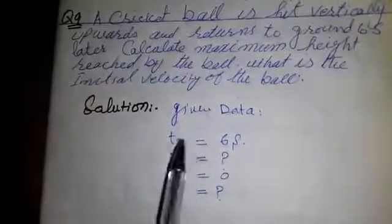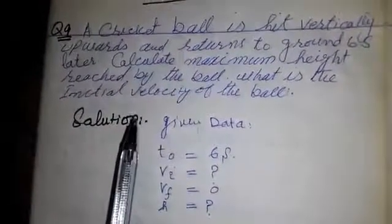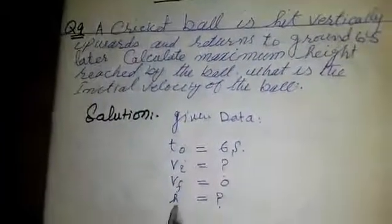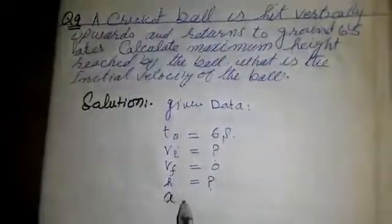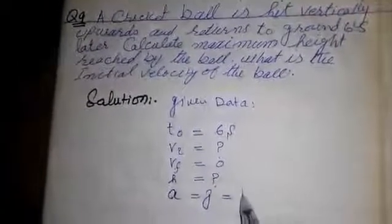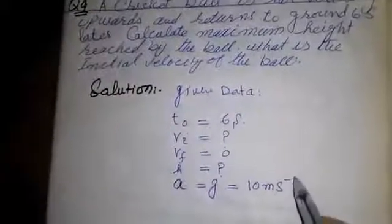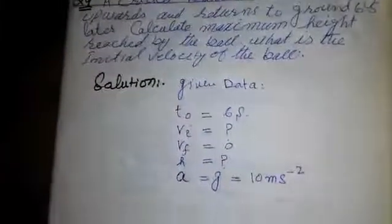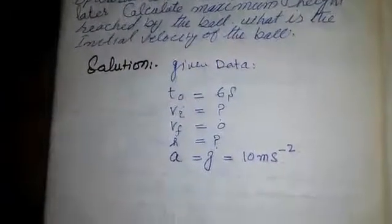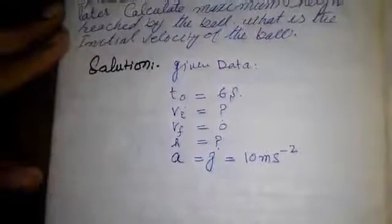When a body is hit upward or downward it moves with acceleration under gravity, which is equal to a equals g equals 10 meter per second squared. Now we have to calculate two things here: one is the maximum height and the other is initial velocity.